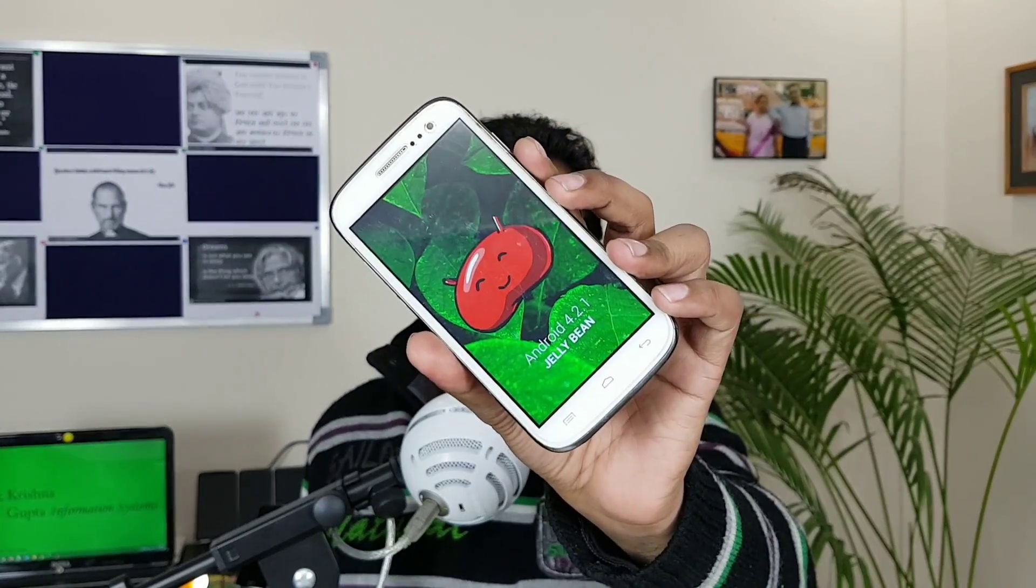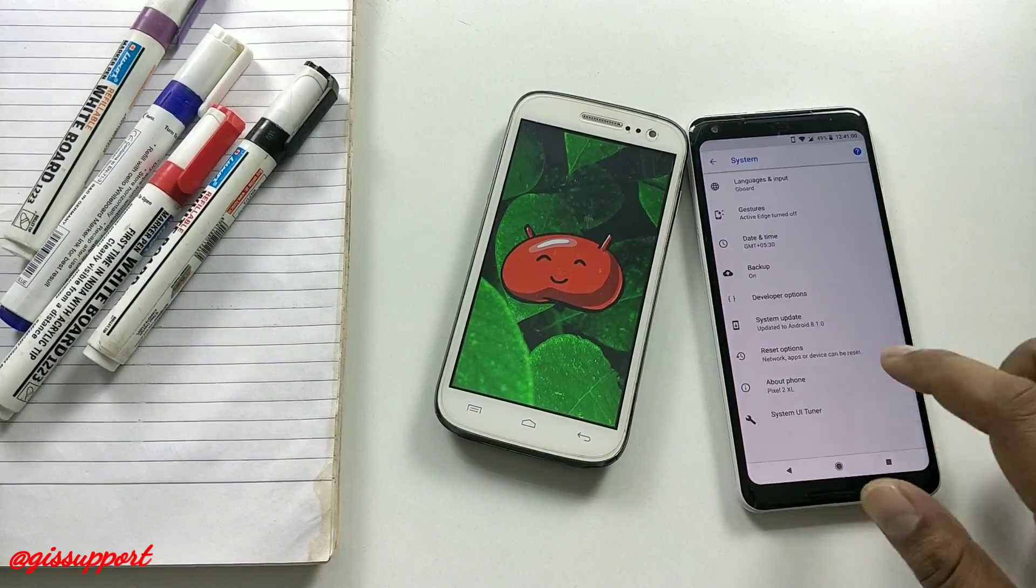I'm sure you recognize this Android version. This device is among my first Android devices when I purchased many years back. This is a six and a half year old device, Micromax Canvas HD. It was running on Android Jelly Bean and it will always run on Android Jelly Bean because there is no update going to come.